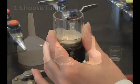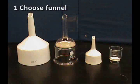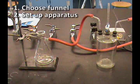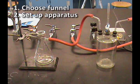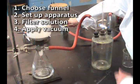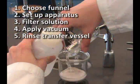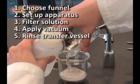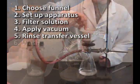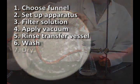Let's review the steps. Choose the type of funnel required. Set up the vacuum apparatus. Filter the solution. Apply partial vacuum. Rinse the transfer vessel and use a policeman to help transfer the solid if needed. Wash the solid two or three times. Let dry for 10 minutes with vacuum on.